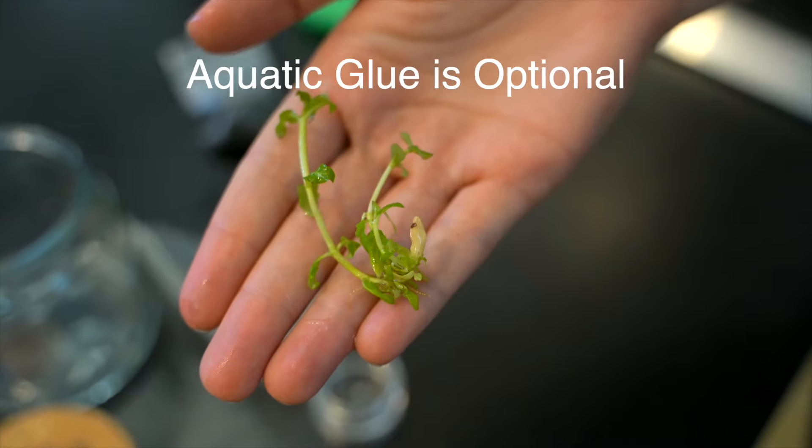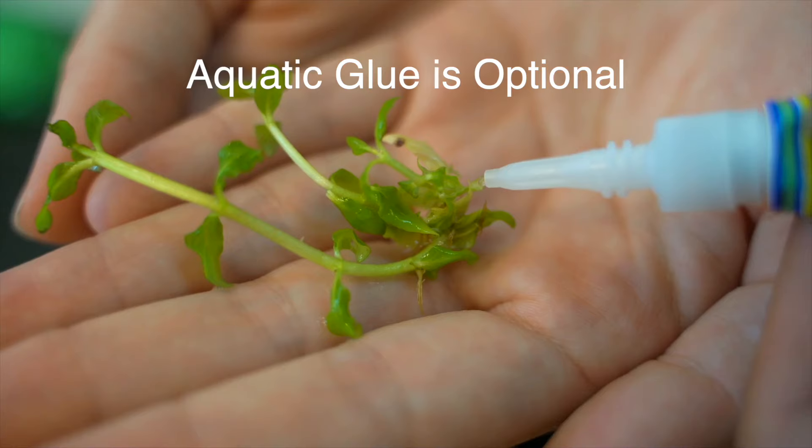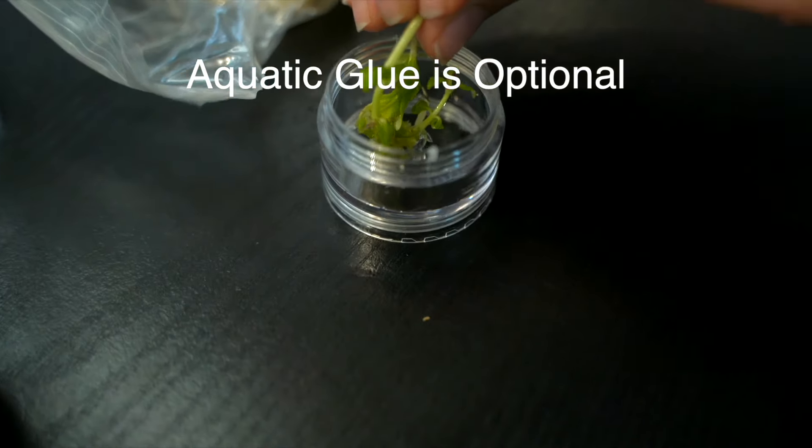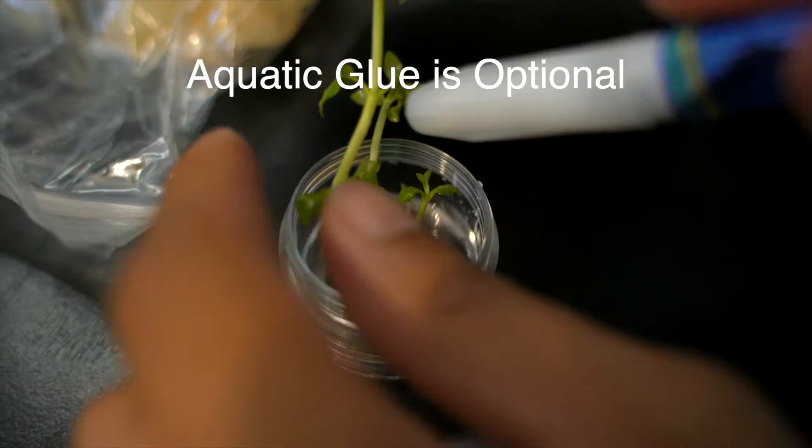Carefully remove the plant, put in some aqua gel to fasten the plant onto the cassette. Position the plant on how you'd like it to stand.